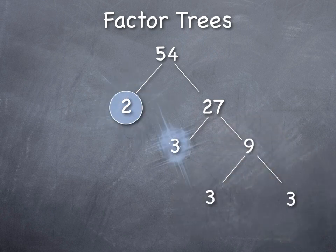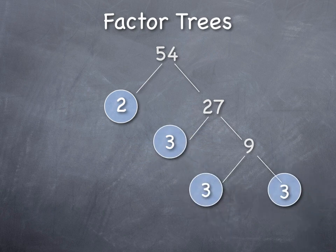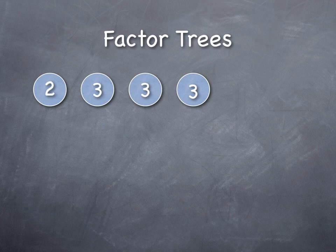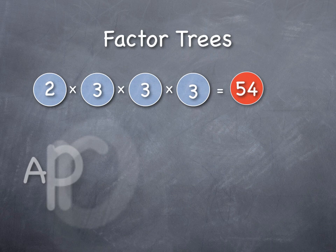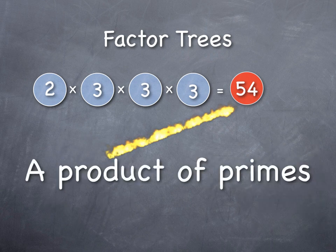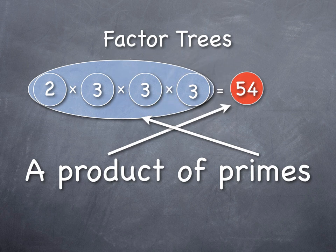So, in this case, we've identified a different set of prime numbers that, when I rearrange them, gives me a different answer. 2 times 3 is 6, 6 times 3 is 18, and 18 times 3 is 54. That is my product of primes, 54 being the product of these prime numbers when I multiply them together.